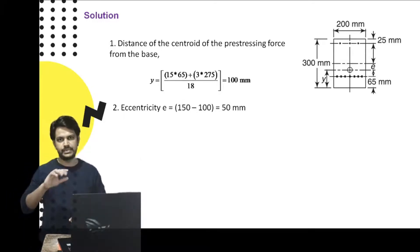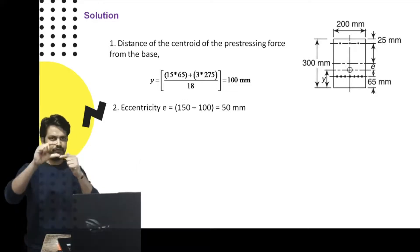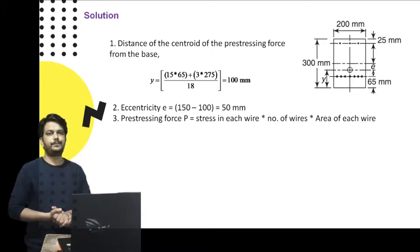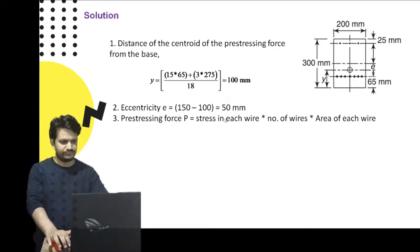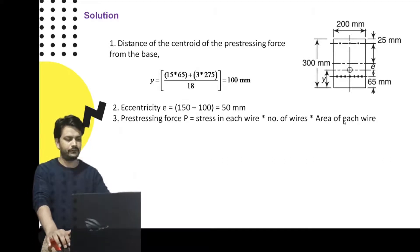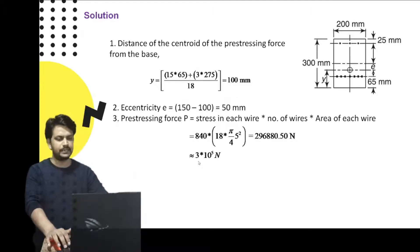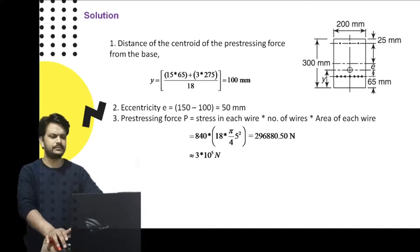The resultant pre-stressing force is at 50 mm from the neutral axis, so the problem simplifies to a single force P at an eccentricity of 50 mm. The total pre-stressing force P = stress × total area of steel = 840 × (π/4 × 5²) × 18 wires = 3 × 10⁵ N, which is 300 kN.